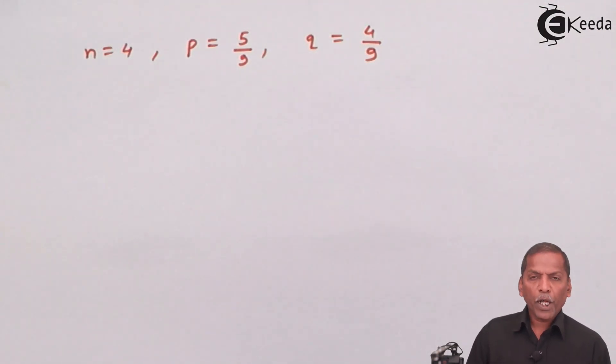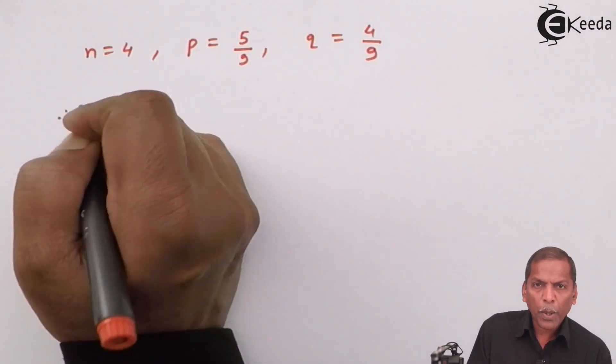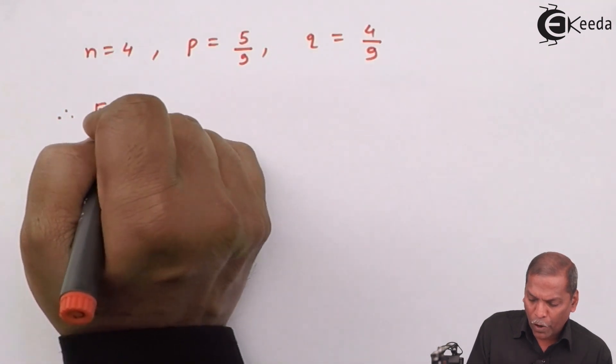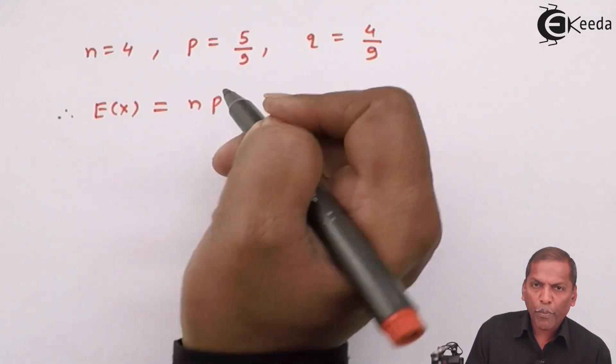Now, in this question, we have to find first of all E of X, that is expected value of X. So, therefore, expected value of X is equal to NP.